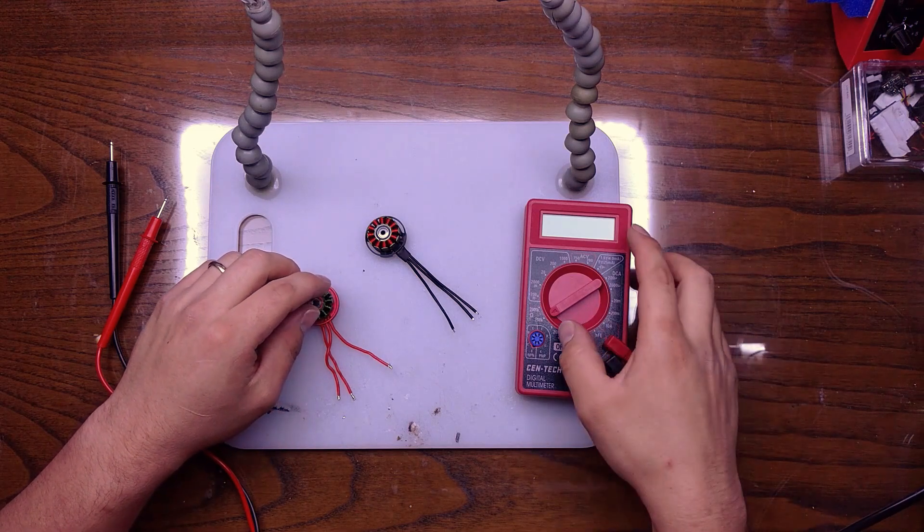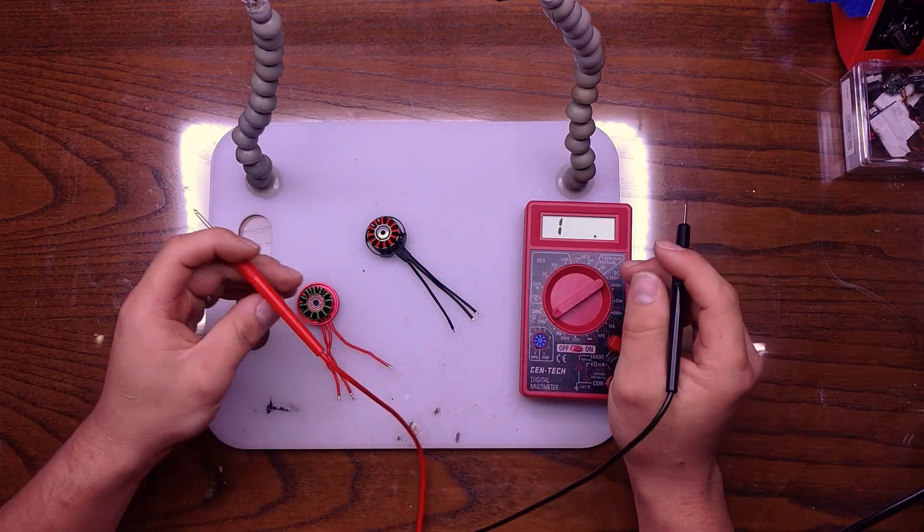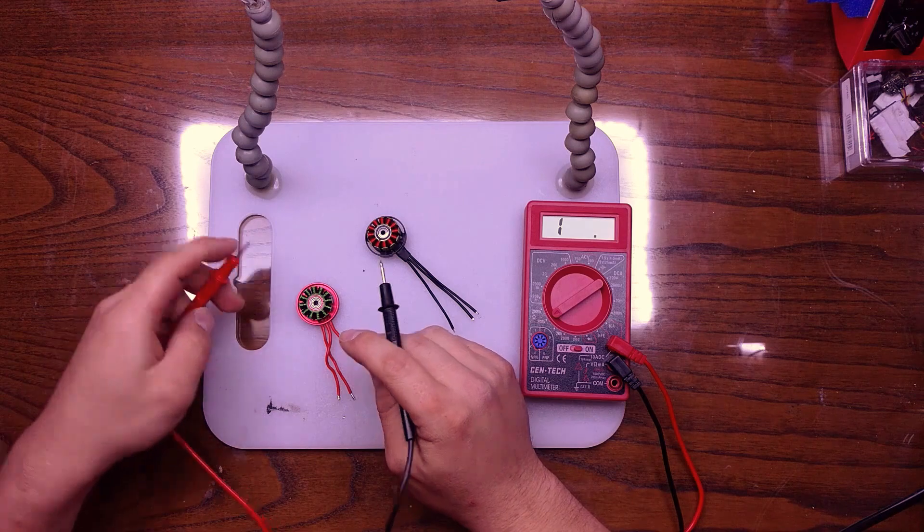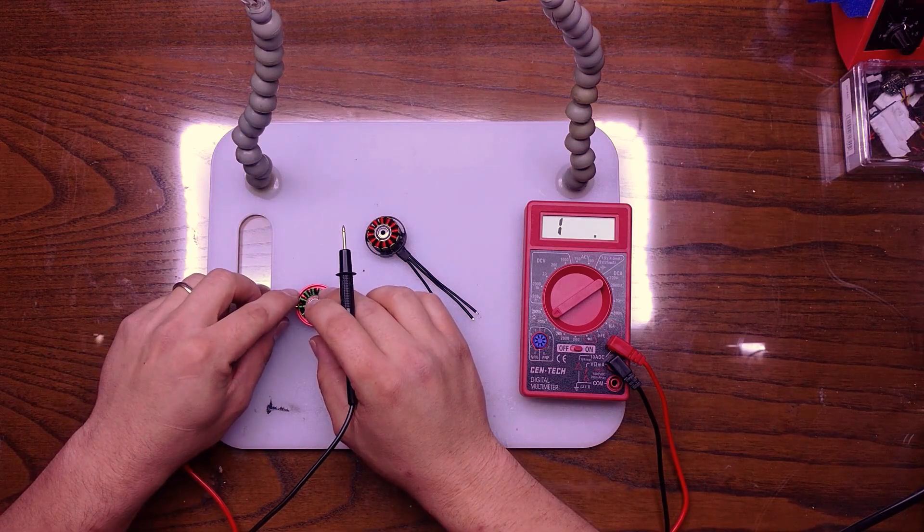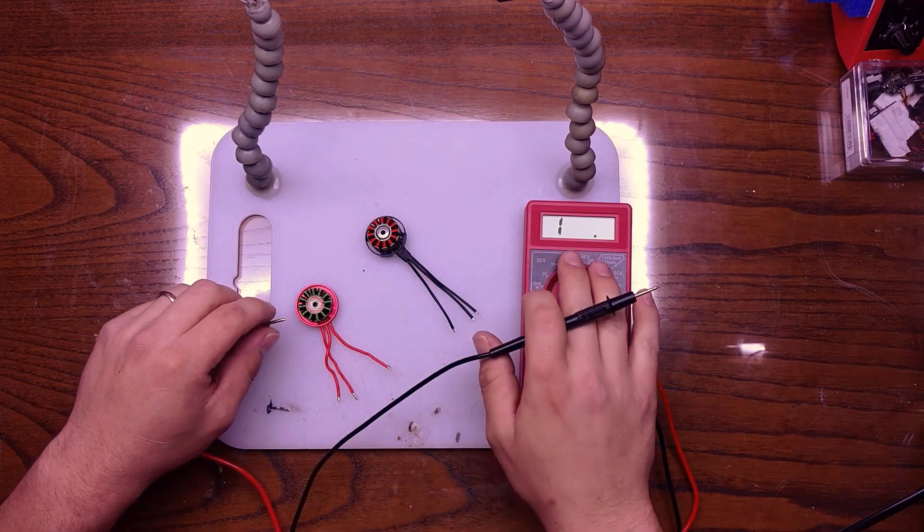So simply, all you have to do is check for continuity. I have a $5 multimeter here. You can pick one up at Harbor Freight, Walmart, anything like that. And all you're going to do is make sure that you have a connection to your stator and then touch one of these leads and see if you have continuity.